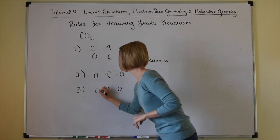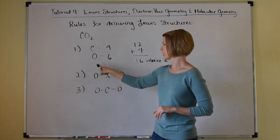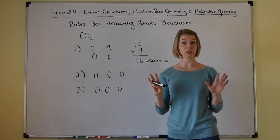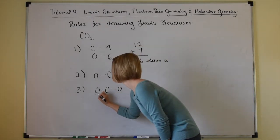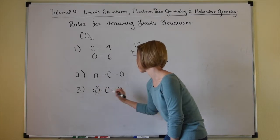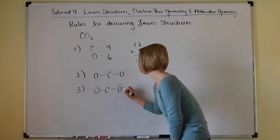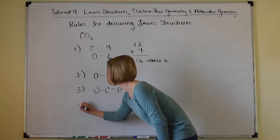Right now we're only showing two electrons for each oxygen atom, but it wants eight. So we add lone pairs to each oxygen to bring the total to eight electrons for each terminal oxygen.